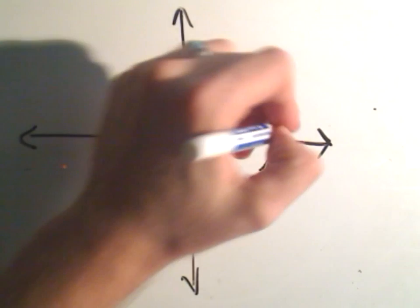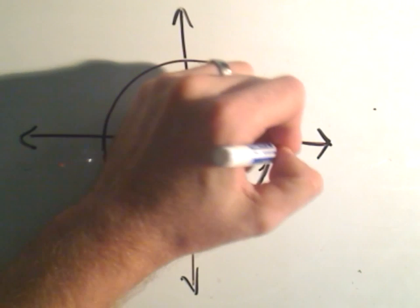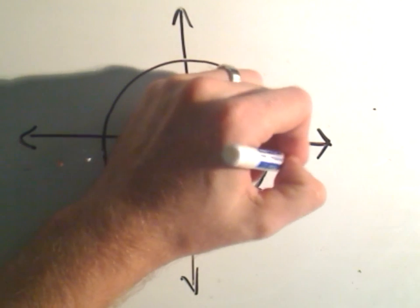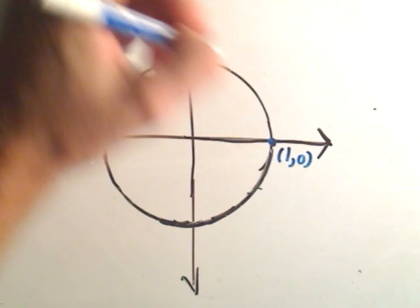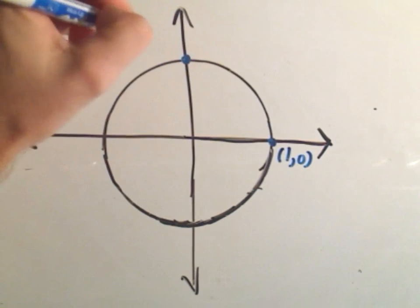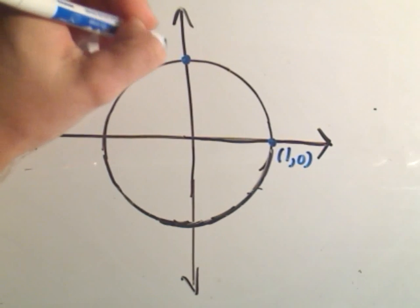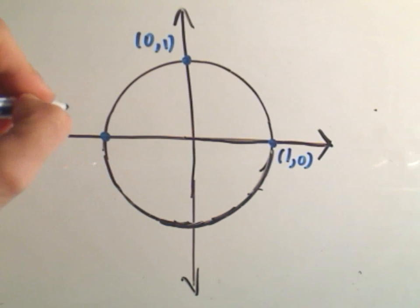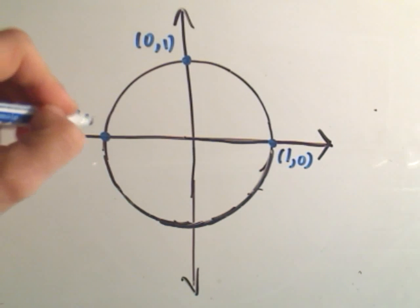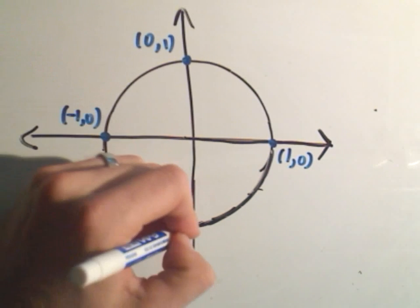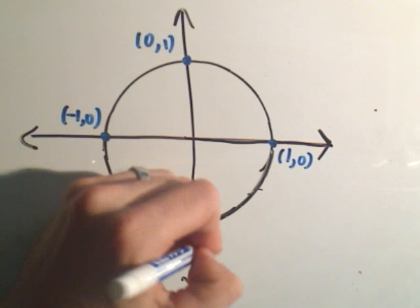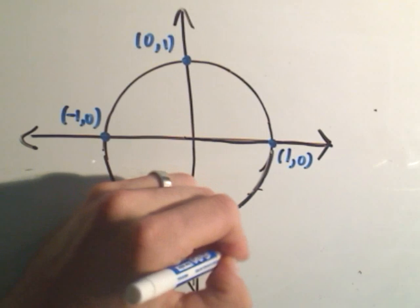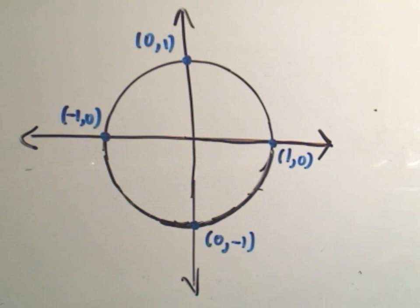The unit circle is a circle of radius 1, so this is (1, 0), (0, 1), (-1, 0), and (0, -1). We're just plotting points — everybody can do this.